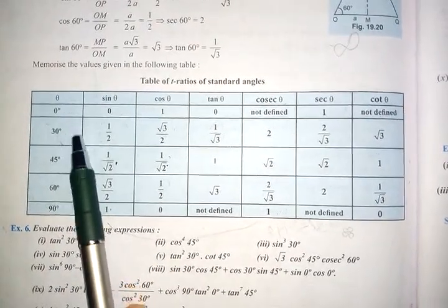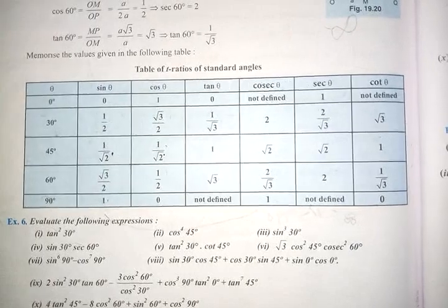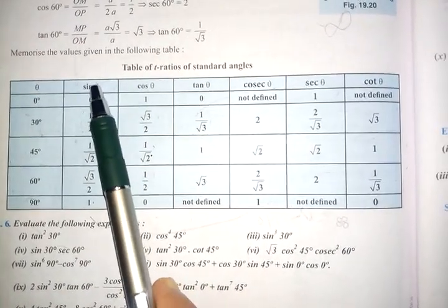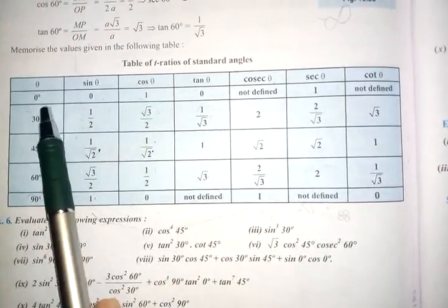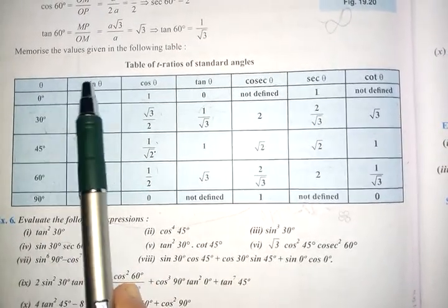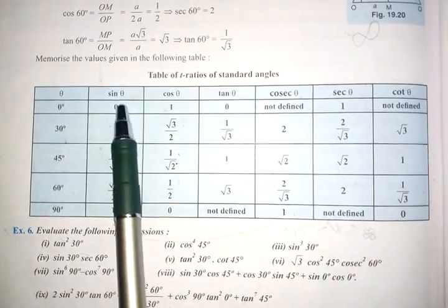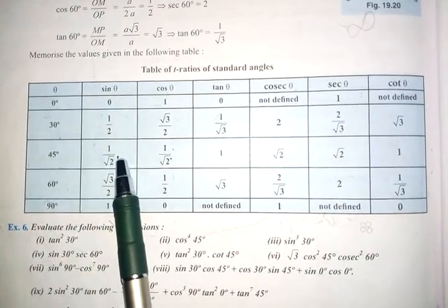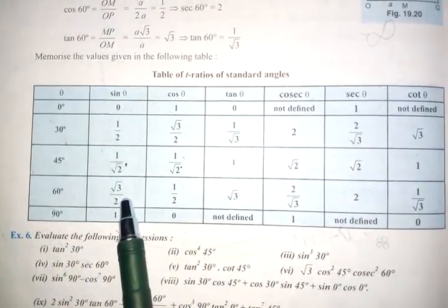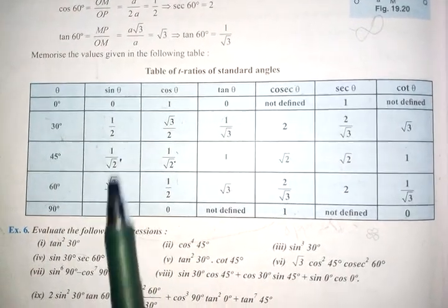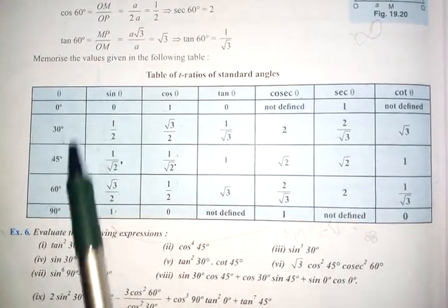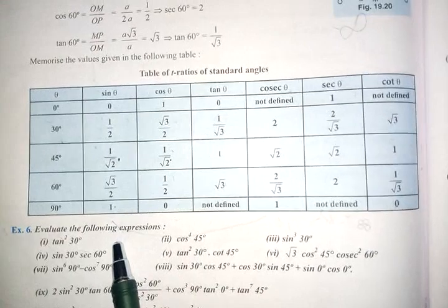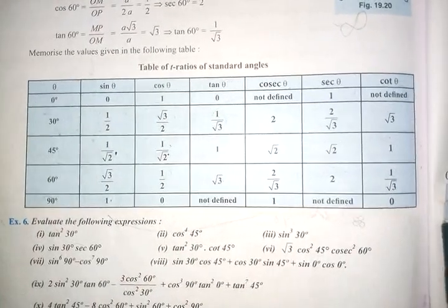The degrees are 0, 30, 45, 60, and 90. This table you have to remember — I am going to teach you some techniques. For sin theta: sin 0° = 0, sin 30° = 1/2, sin 45° = 1/√2, sin 60° = √3/2, and sin 90° = 1. If you remember this particular column, the rest of the values will come automatically. So the first column you need to memorize, but from the second column onwards there is a technique.